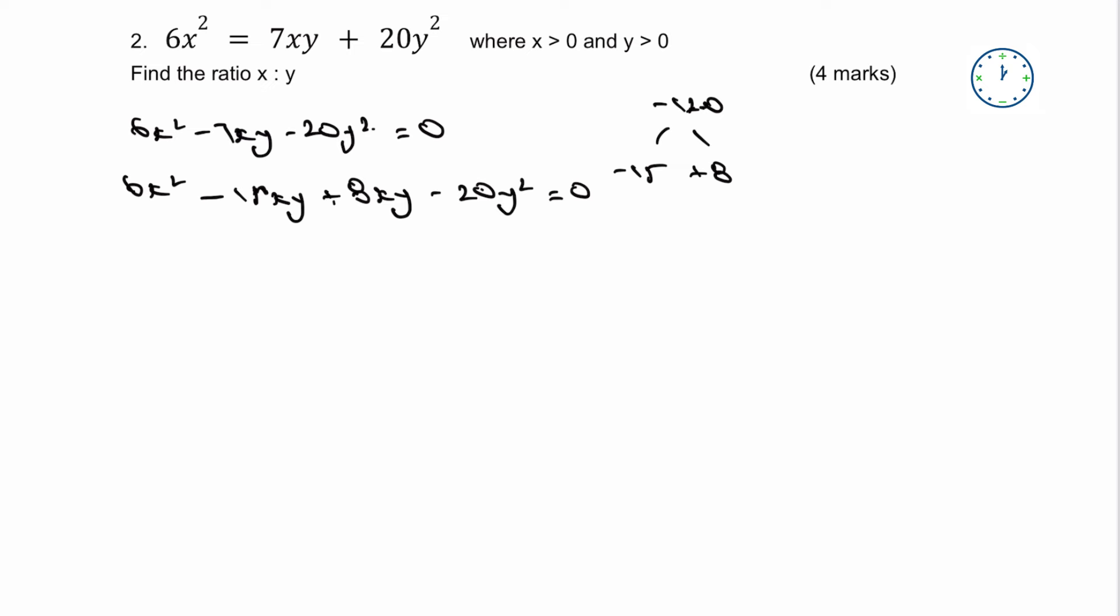Therefore, if I look at the first two terms, I can factorise those for 3x. And what I'm going to get is a bracketed term, which is going to be 2x - 5y. I look at the second two terms, I can factorise those for plus 4y, and in the brackets I'm going to get 2x - 5y.